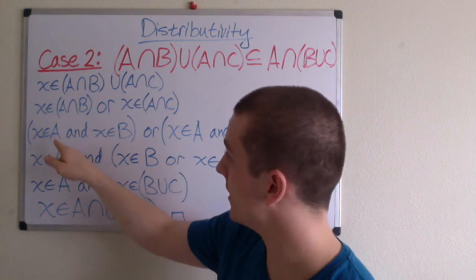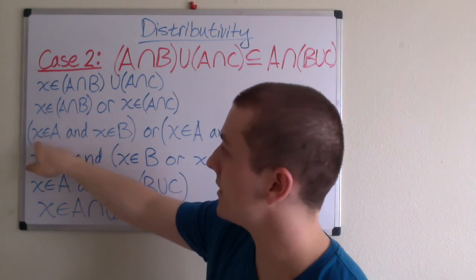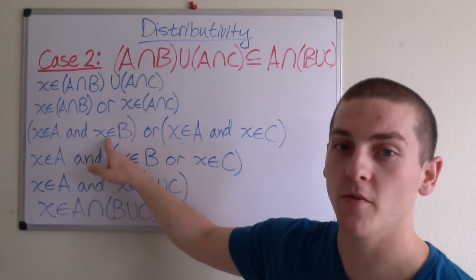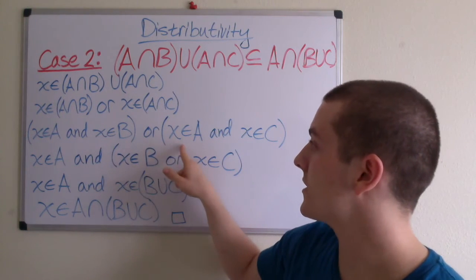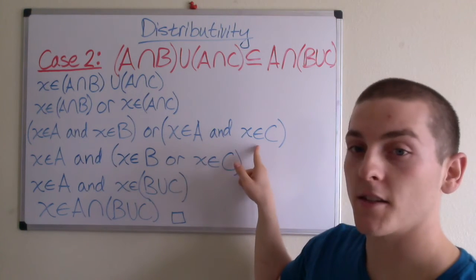From here, we can then state that X is an element of A and X is an element of B or X is an element of A and X is an element of C.